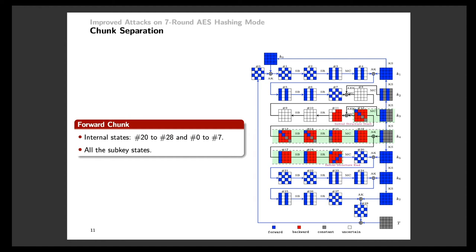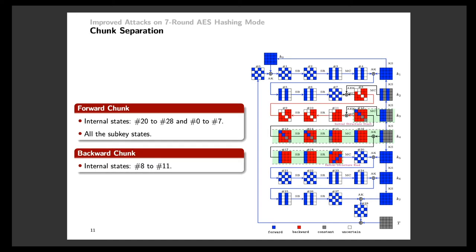After defining the initial structure, we need to separate the chunks so that they can be computed independently as long as possible. All the subkey states belong to the forward chunk. For the internal state, the forward chunk includes states 20 to 28, and in the last round we omit the mixed column transformation. Then the final state 28 can be spliced to the first state 0. Because of the omission of last-round mixed columns, the forward chunk can be further extended to round 7. For the backward chunk, it includes states 8 to 11, and the computation starts from state 11 in the backward direction.